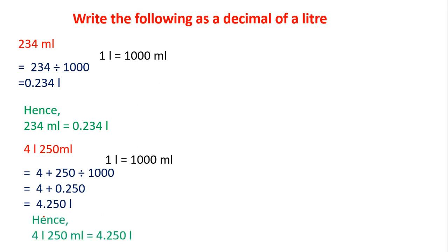Hence, 4 liter 250 milliliter is equal to 4.250 liter. Let's take one more problem: 15 liter 5 milliliter. Here also there are two units — one is liter, another one is milliliter. We have to convert this 5 milliliter as a liter.